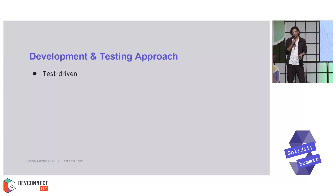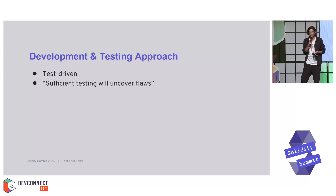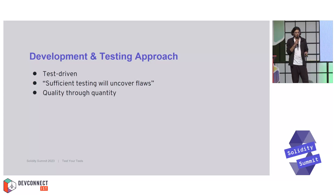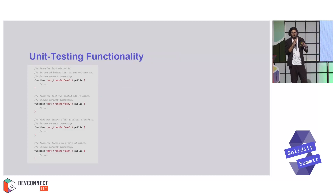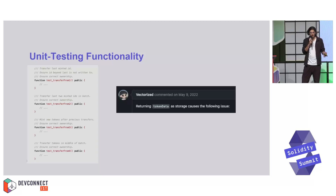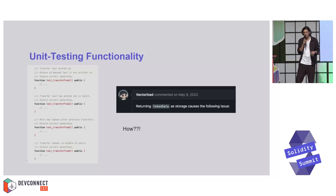A bit about my development and testing approach at the time: I would describe it as very test-driven. I was leaning heavily onto my tests, writing them before the actual implementation. The idea was that sufficient testing would uncover any deviation from my specification. I also had this notion of quality through quantity. However, this led me to lose sight of the bigger picture and miss some nuances. Imagine my surprise when I got a comment saying there was a bug in my implementation, despite these tests running alongside Foundry's ERC-721 unit and fuzz tests.